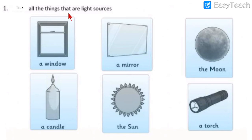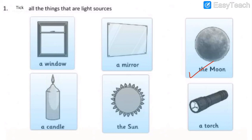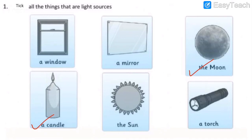Next, tick all the things that are light sources. A window — not a source of light. A mirror — also not a source of light. The moon — yes, the moon is a source of light, so tick. A candle — yes, tick. The sun — yes, the most powerful source of light, tick. A torch — yes, an artificial source of light, tick.